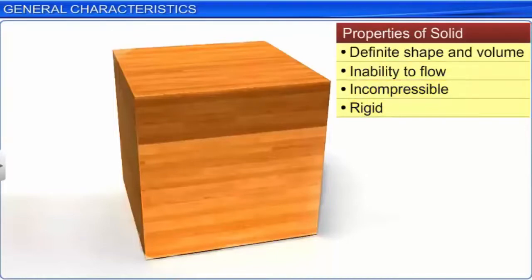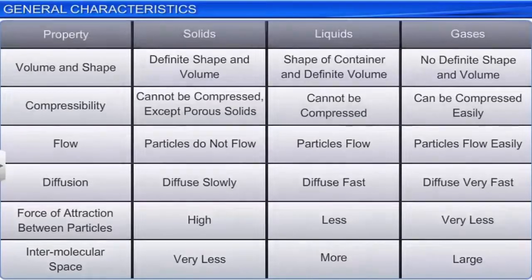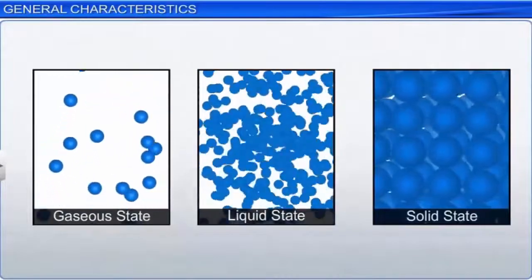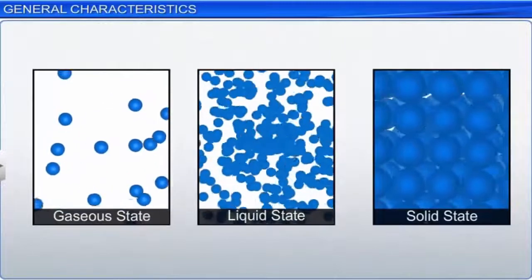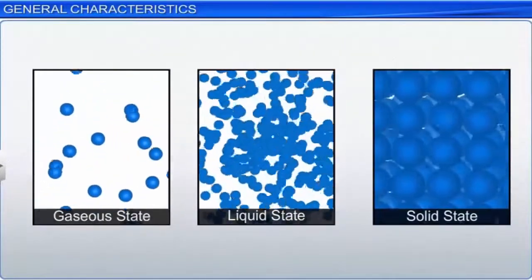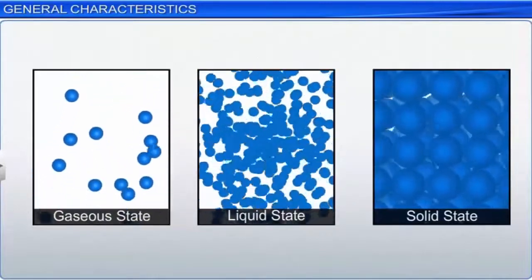In general, the distinct properties of the three different states can be attributed to the arrangement of the constituent particles. Any change in the arrangement of these constituent particles changes the physical state of a substance. In turn, the arrangement of the constituent particles in a particular substance depends upon the external conditions of temperature and pressure.